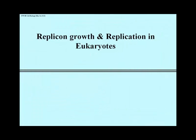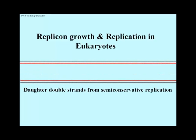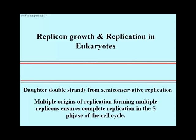Here's a representation of how linear chromosomal DNA of eukaryotes undergoes bidirectional replication from multiple origins of replication. An origin of replication forms a replicon with two replication forks. Multiple origins start unwinding at different locations and times, forming replicons that each replicate bidirectionally, eventually meeting to form a complete daughter DNA double strand. Since single eukaryotic chromosomes can have 25 to 50 or more times the amount of DNA of a bacterial cell, multiple origins of replication ensure all the DNA in a chromosome is replicated during the 8 to 10 hours or less of the S phase of a eukaryotic cell cycle.